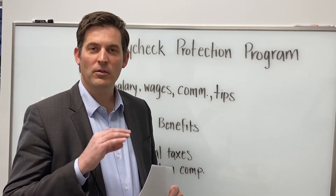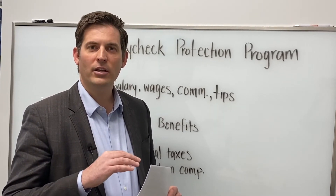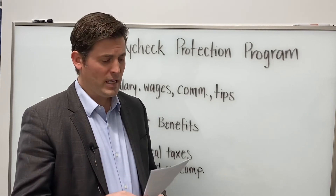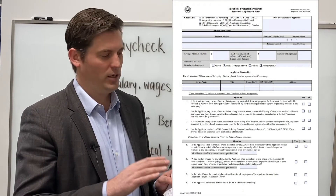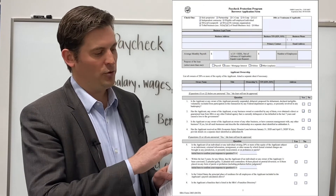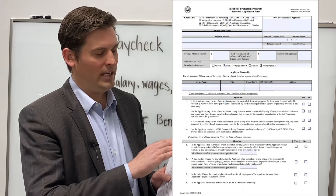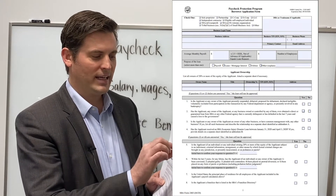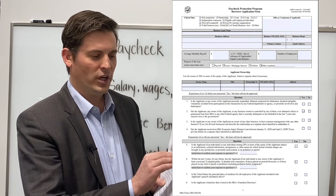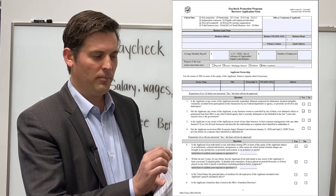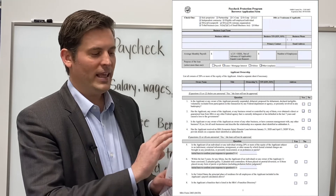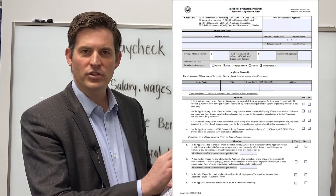To begin with, it's just basic information: your business legal name, your business address, your tax ID, your contact phone number, and if you have a DBA, that information is simple.